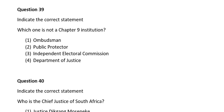Question thirty-nine. Indicate the correct statement. Which one is not a Chapter 9 institution? Number one, Ombudsman; number two, Public Protector; number three, Independent Electoral Commission; number four, Department of Justice. The correct answer is number four: Department of Justice.